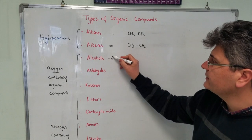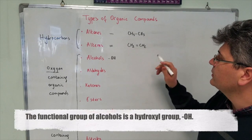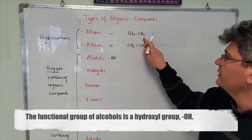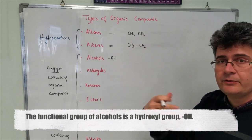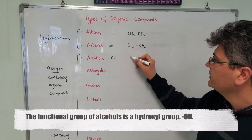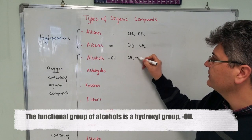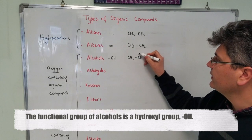The functional group of alcohols is an OH group. If you take one hydrogen out from an alkane and add an OH group, what you get is an alcohol. So, CH3-CH2-OH. This is an alcohol.